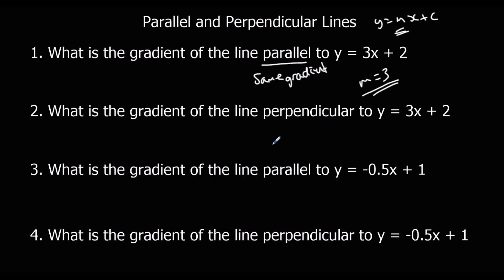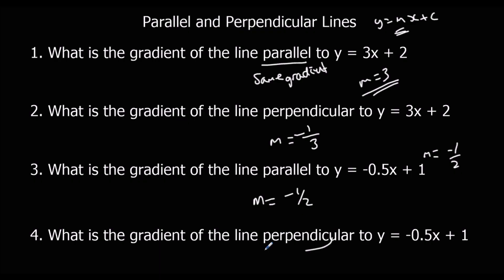A perpendicular gradient is going to have to multiply to give minus 1, so we flip and minus. Flip goes to a third, and then minus — so minus a third. Here we've got the original gradient of minus a half. Any parallel line is also going to have the gradient minus a half. But for a perpendicular line, we have to flip and minus. Flip to become 2, and it's already minus, so it becomes plus 2. Plus 2 times minus a half is minus 1. Minus a third times 3 is minus 1. So that's the rule for perpendicular gradient: we flip and minus. Parallel is the same.